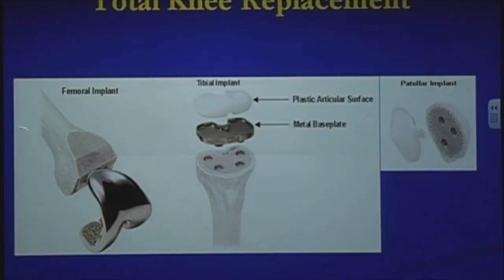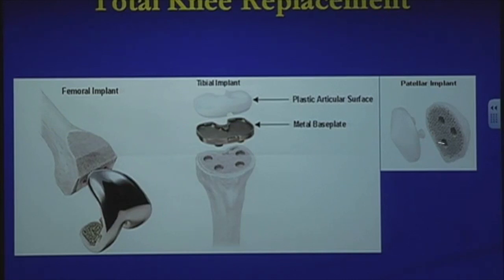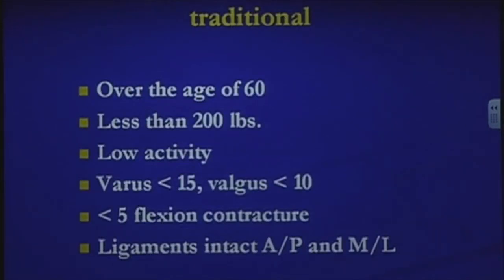For a total knee, we remove the entire articular surface. The metal implant caps the end of the femur. The tibia is cut perpendicular to the shaft and the metal base plate is glued to the tibia, with the plastic locked into the base plate. Not all surgeons resurface the kneecap, but usually it is resurfaced — the back side of the kneecap is cut and plastic is glued there to articulate with the thigh bone.